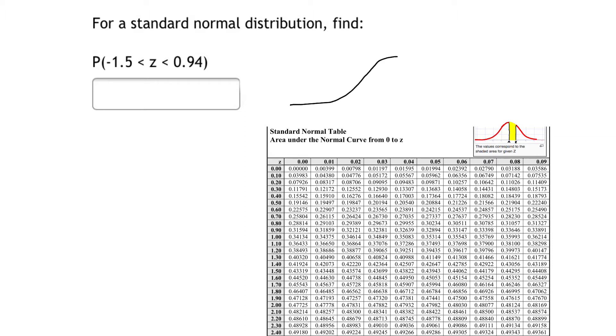We have our standard normal curve with our mean that lies straight in the middle. What we're looking for is the probability that z lies between these two values.